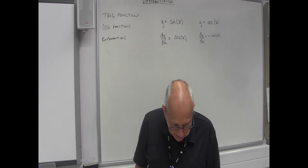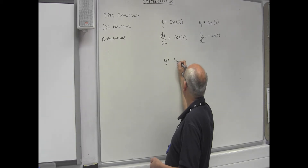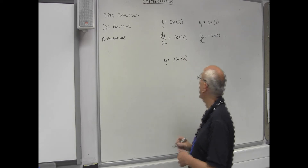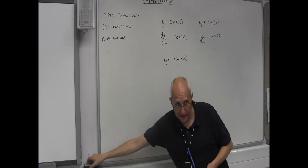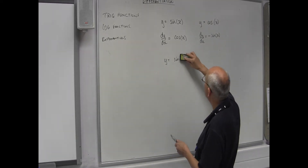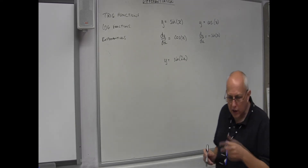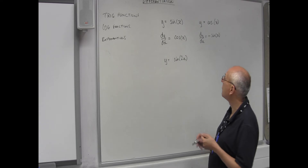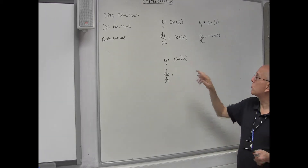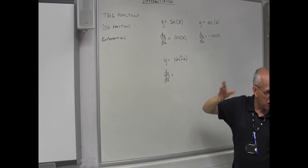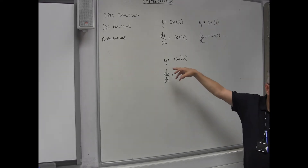You'll notice on your sheet that the next one down has sine kx. All this k means is some constant, some number — so it could be two. Let's put two in there, making a bracket: we've got sine 2x. If you look at your table it'll tell you what to do — it's fairly straightforward. We're using x and y — that's your standard algebraic function where x is your domain and y is your range.